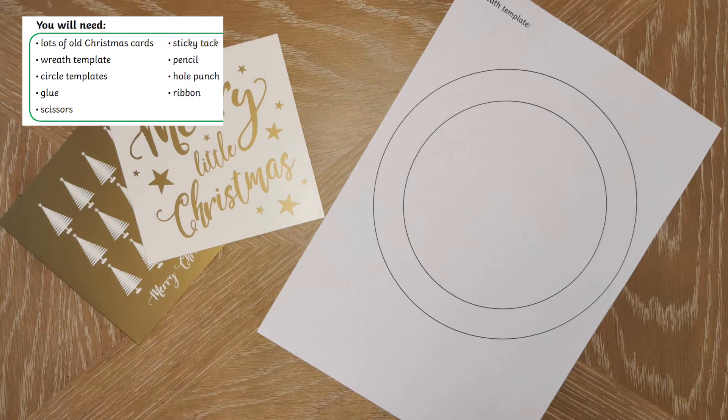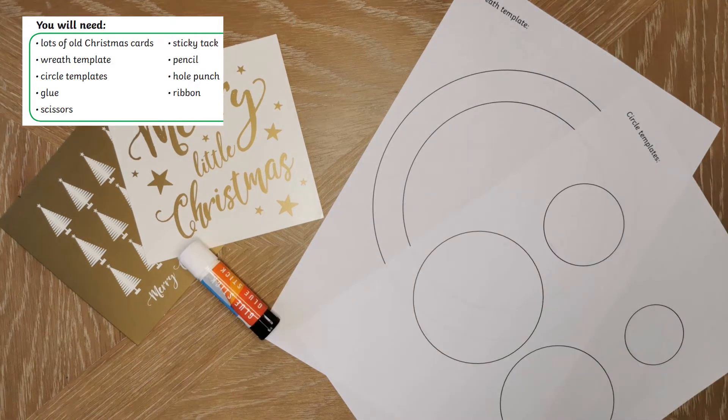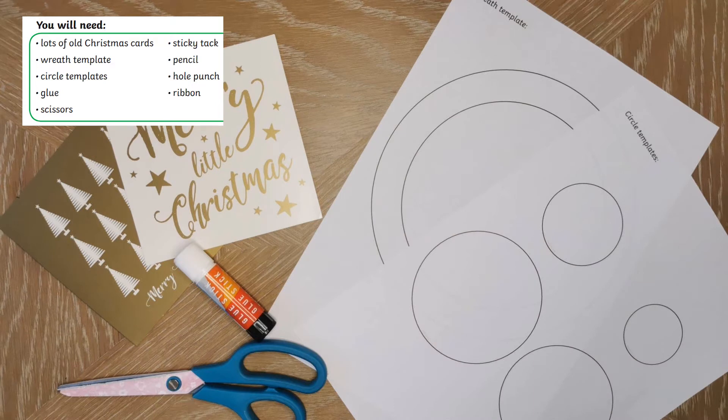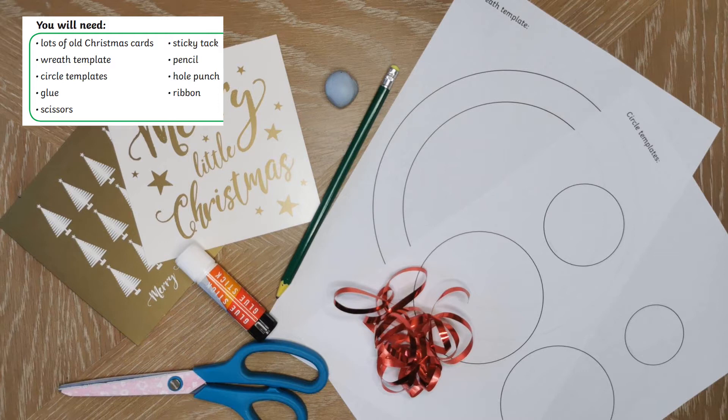You will need lots of old Christmas cards, the wreath and circle templates from this pack, some glue, some scissors, some sticky tack, a pencil, a hole punch, and some ribbon.